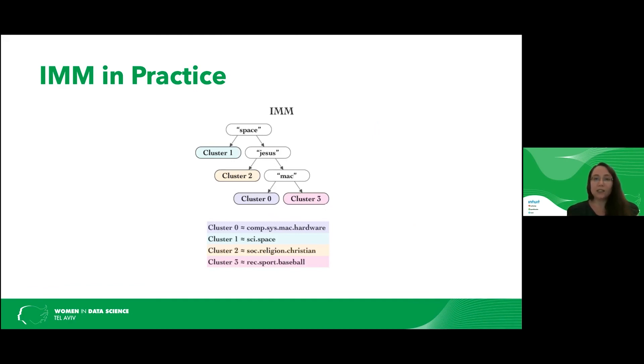And one last example, we took the 20 news dataset, we took four subjects out of that, and then ran the IMM algorithm. Each feature was a word. And what we saw is that IMM was able to understand completely by its own that, for example, if we want to understand if there is the word Jesus, then the example probably relates to Christianity.